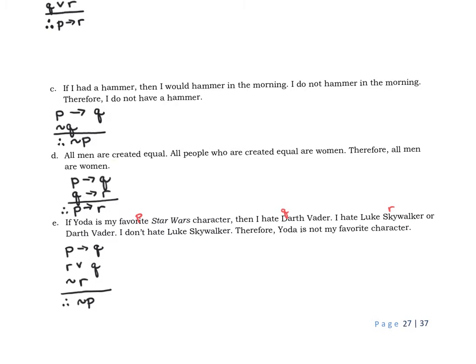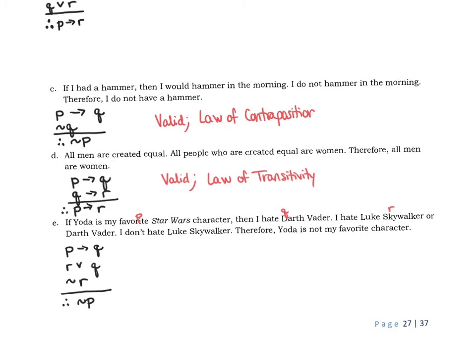As crazy as that sounds, from a logical standpoint this is 100% a valid argument — this is the law of transitivity. Part C might look somewhat familiar as well: that one is the law of contraposition, also a fully valid argument. It looks exactly that way in the law; we didn't switch any negations or anything around.